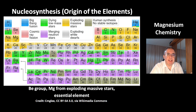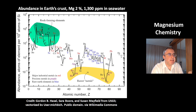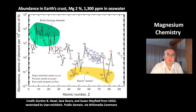Magnesium is an essential element for life. This is a picture of the chemical elements' abundance in Earth's crust — magnesium is here. Very abundant: 2% of Earth's crust is magnesium, and in seawater it's at a concentration of 1,300 parts per million.